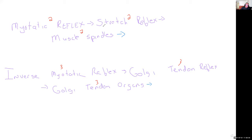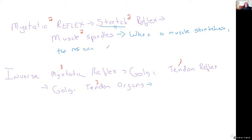The stretch reflex kind of says right in its name what it does. When a muscle is stretched, the muscle spindle can override that stretch and cause a contraction — specifically to avoid overstretch. If you do a low and slow stretch, the muscle spindle really doesn't trigger off. This is an overstretch issue.